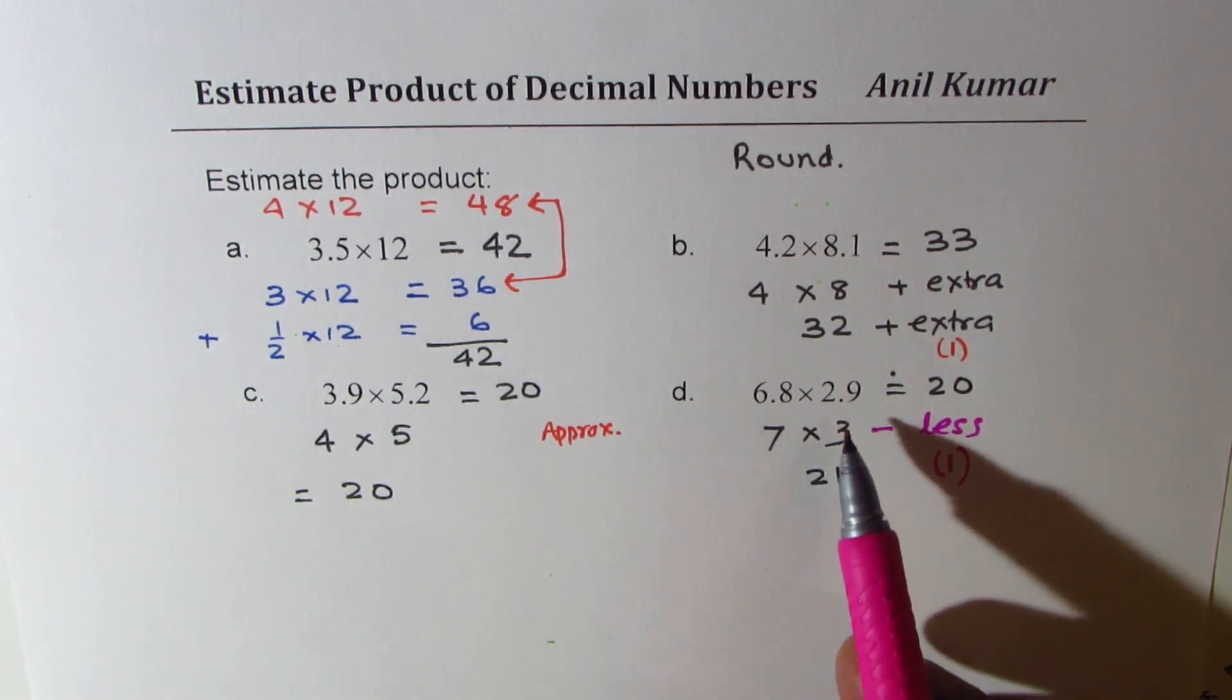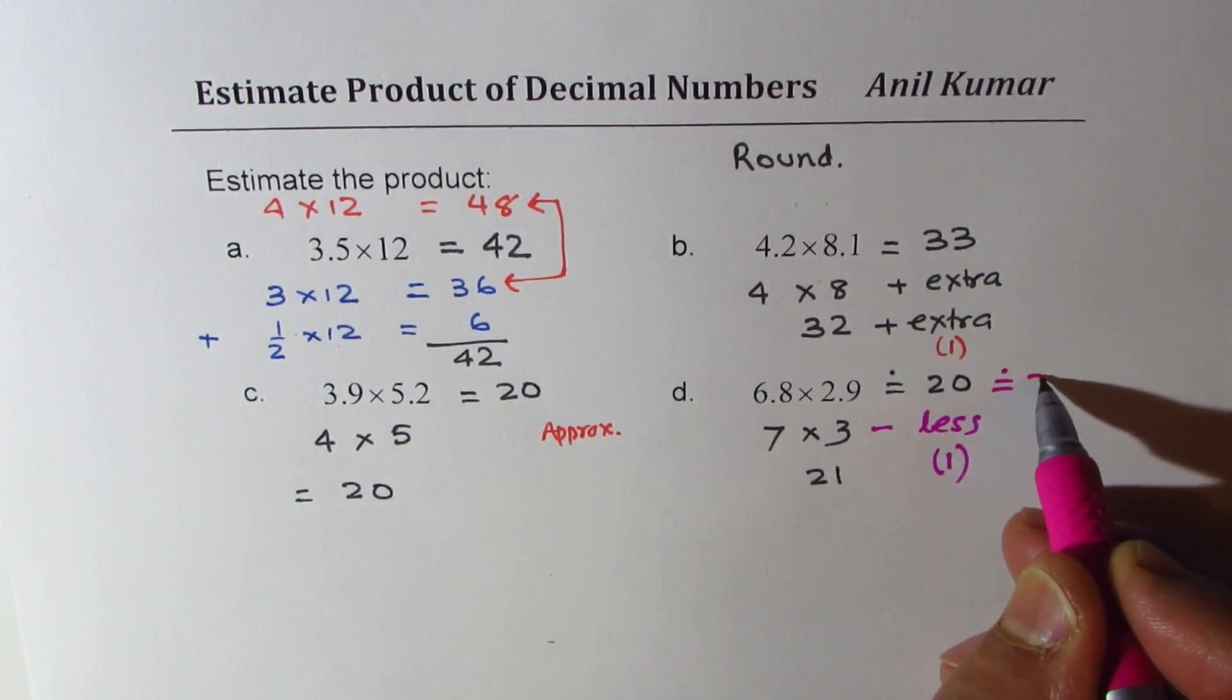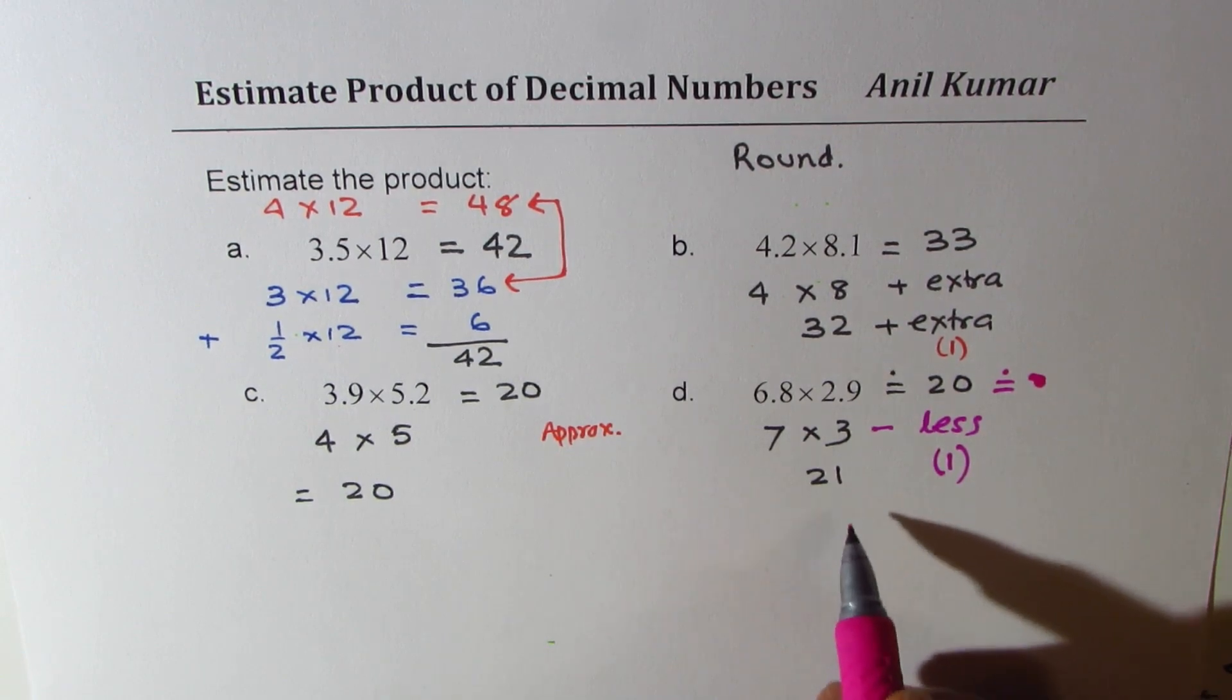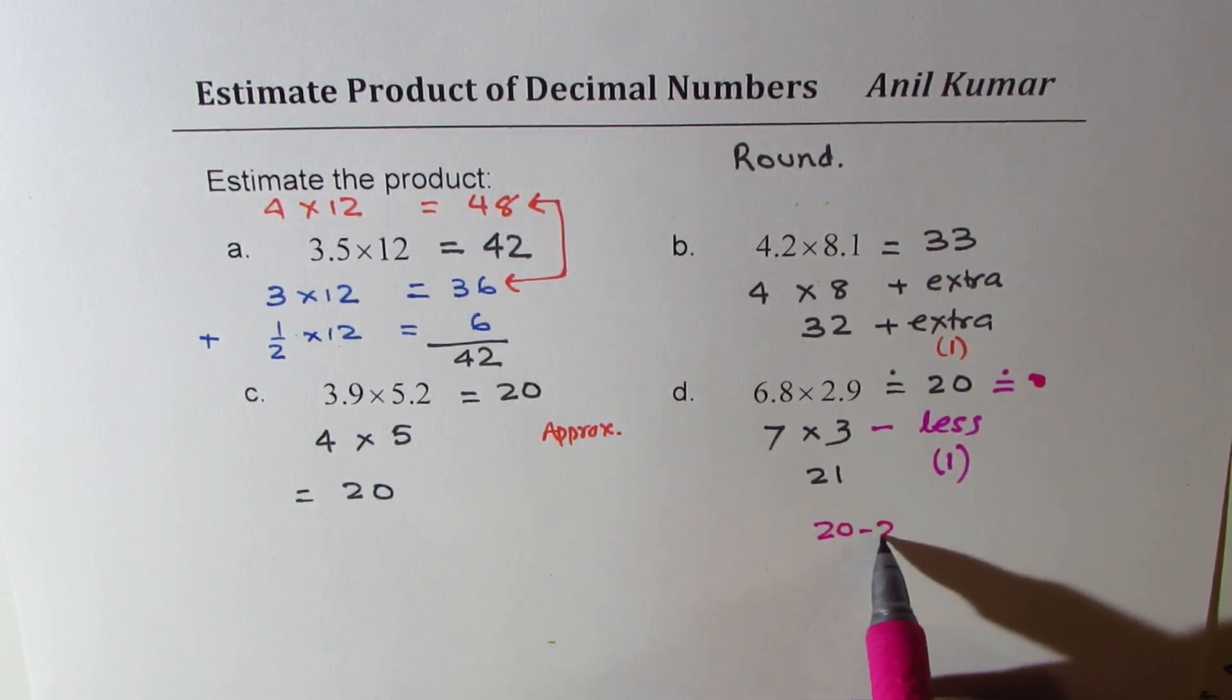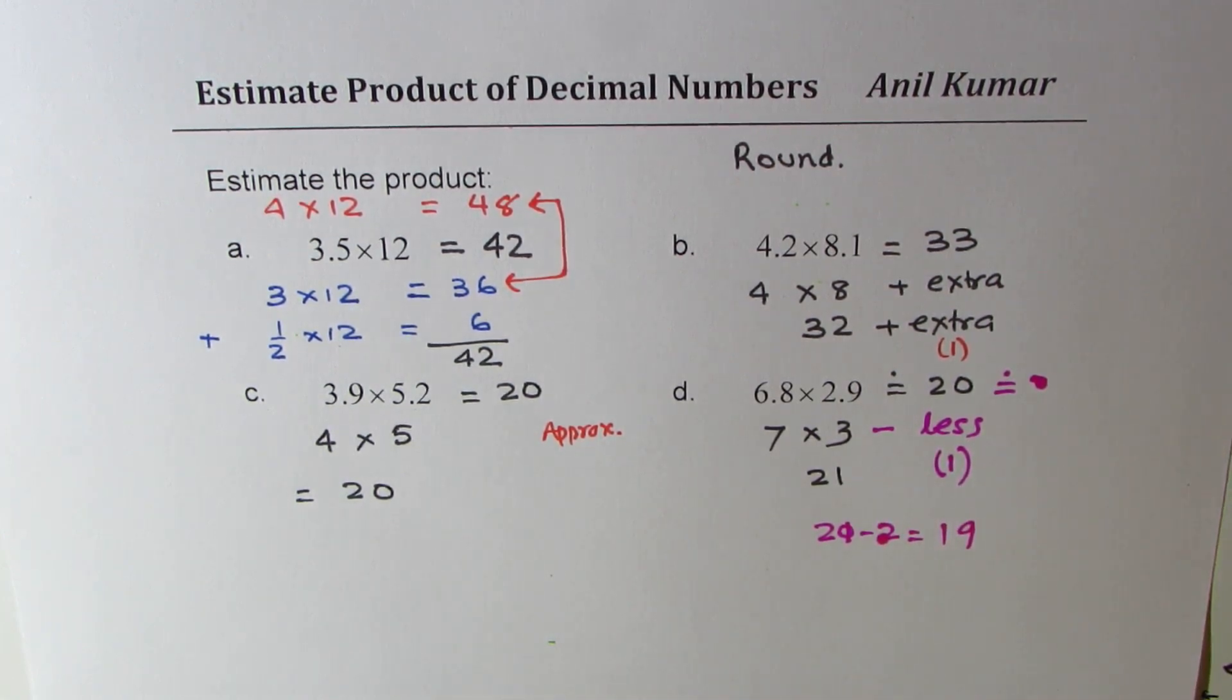Since we went higher for both, we could have taken 2 also. We could have estimated this to minus 2, which is 21 minus 2 as 19 also. So like this, you need to estimate. In simple product of decimal numbers, this strategy could be applied.